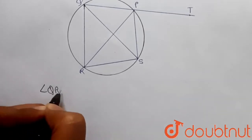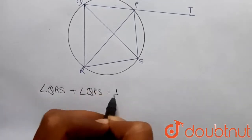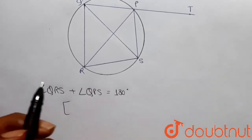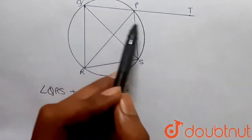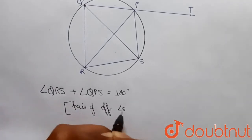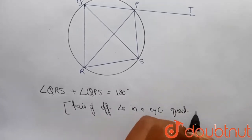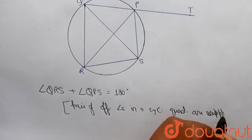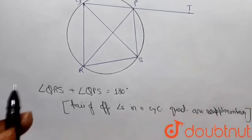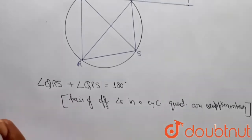From this figure I can write that angle QRS plus angle QPS will be equal to 180 degrees, because these two are pairs of opposite angles in a cyclic quadrilateral. Since pairs of opposite angles in a cyclic quadrilateral are supplementary, their sum is always equal to 180 degrees. So angle QRS plus angle QPS equals 180 degrees — let's call this equation one.